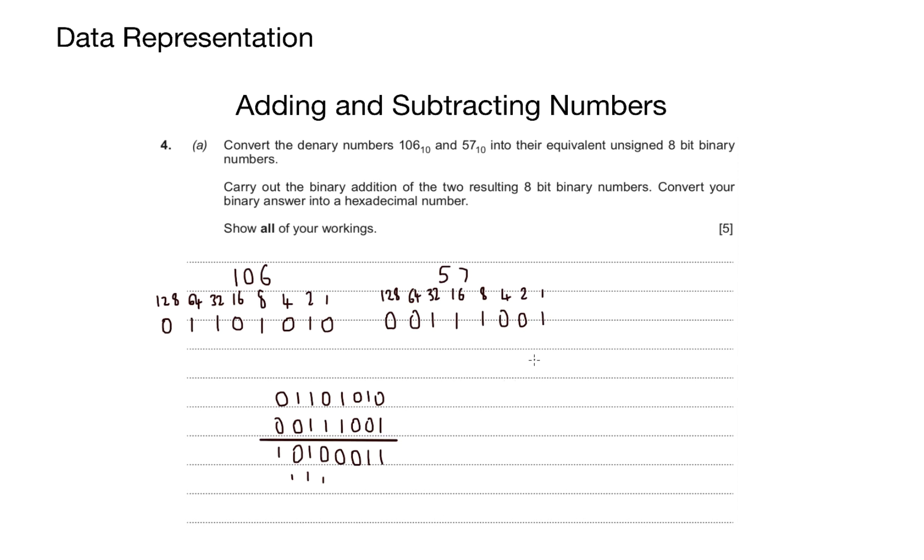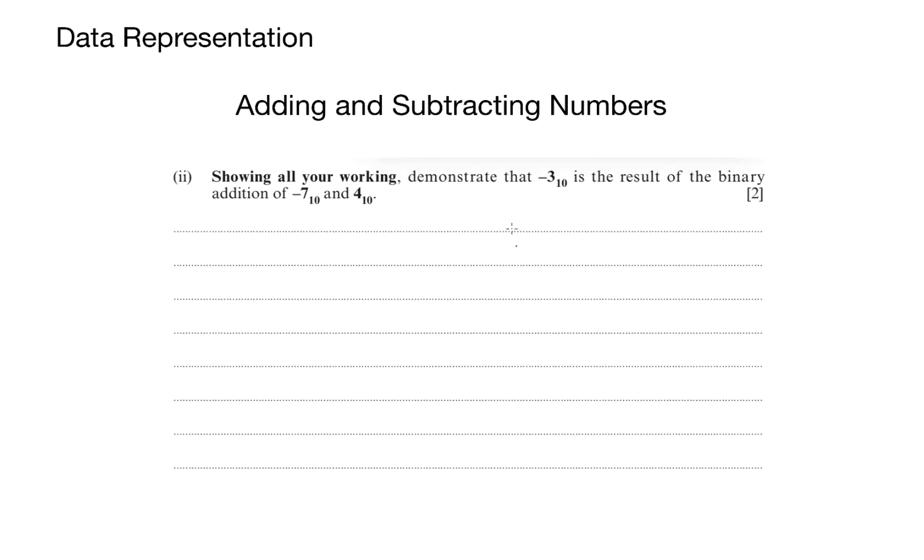The final part of our question asks us to convert your binary answer into a hexadecimal number. That's nice and simple. I'm just going to rewrite out my binary answer again. I'll split it into two nibbles and tell you what the hexadecimal number is. And for this question, the answer was A3.